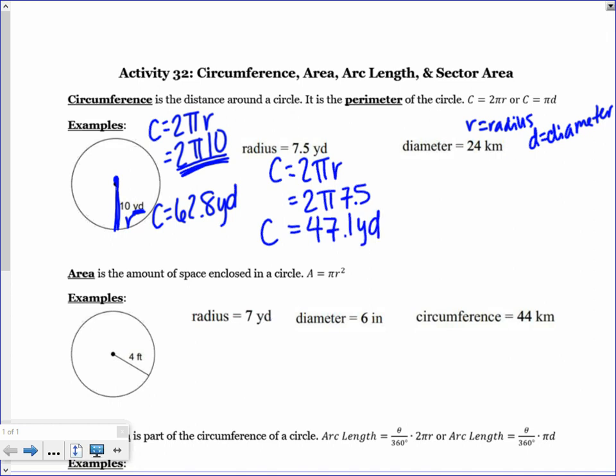On the next one, they give us the diameter, so this time it makes more sense to use πd. So π times 24, which is approximately 75.4 kilometers. That's how you find your circumference. You know your formula, it's pretty straightforward. You just plug it into your calculator.